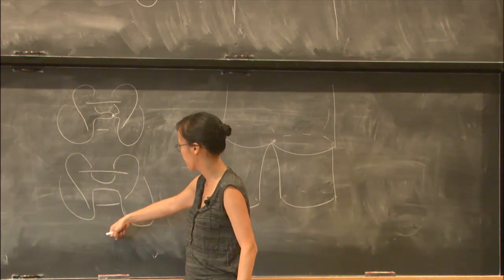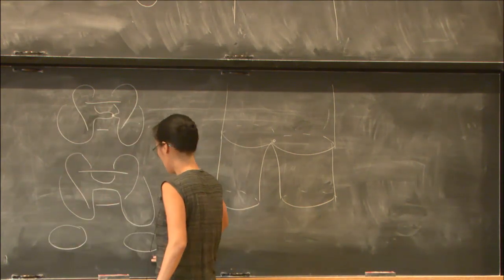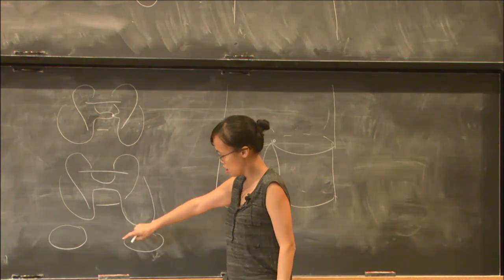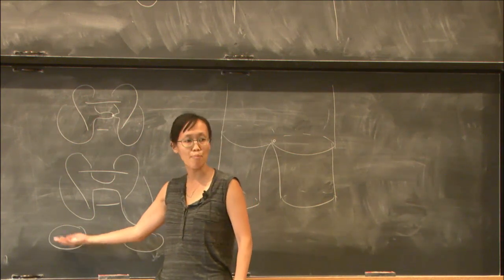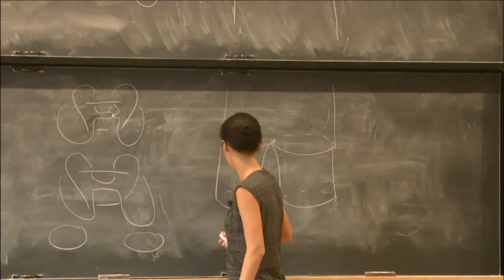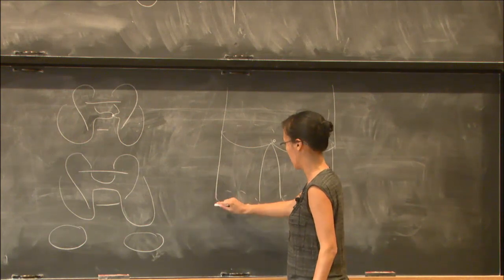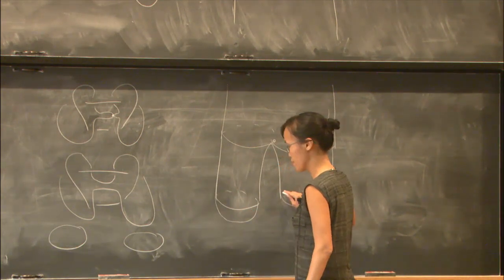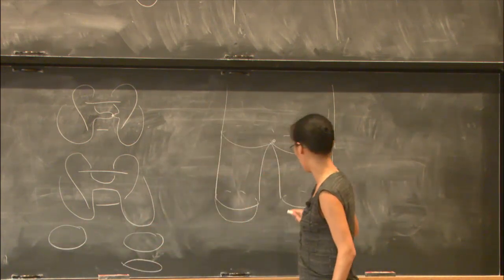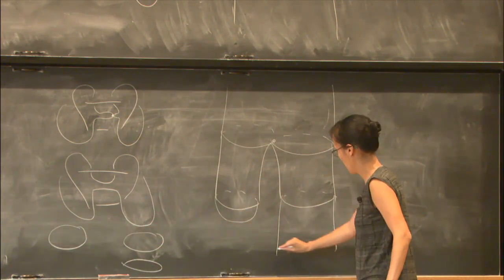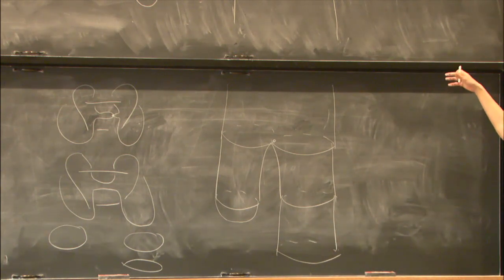If you stare at this, this is actually the two-component unlink. You can sort of pull this piece down, and then the two components come apart. Since we have two unknots and they're not linked in any way, we can cap off one of the components with a disk. You have a sort of pair of pants here, and we'll cap off one of the legs with a disk.